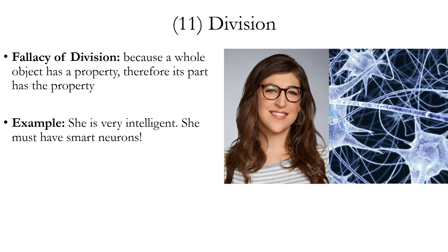The fallacy of division is the converse of the fallacy of composition — we reverse the order of the whole-part relation. The fallacy of division argues that because a whole object has a property, therefore its part has that property. Example: she is very intelligent, so she must have very smart neurons. Intelligence is a property of her whole brain or nervous system, but it doesn't necessarily mean that individual parts of the nervous system have the property of intelligence. To remember: division divides the whole into its parts — you start from the property of the whole and reason to a property of the part, which is a fallacy.